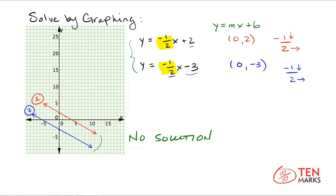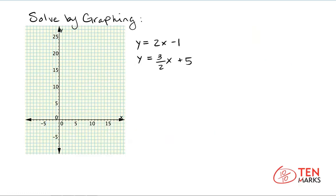Let's solve another problem together. Here is the second system of equations. Again, both equations are written in the form y equals mx plus b, so it's going to make graphing easy. Let's mark the first line in red. Notice that the y-intercept will be negative one, which means it has the coordinates zero comma negative one. Let's mark that point on the graph.